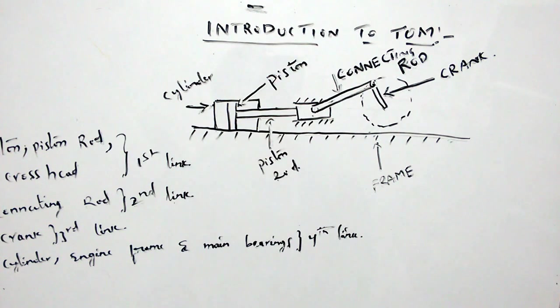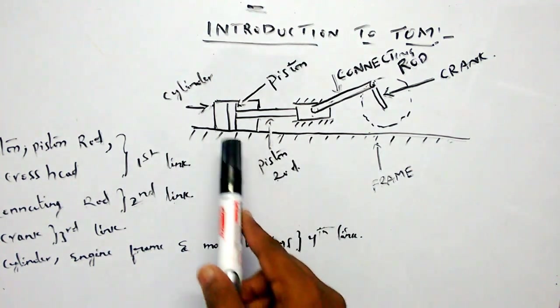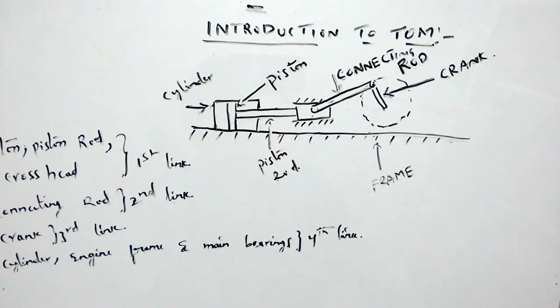For example, if you take a reciprocating steam engine, it converts heat energy into rotary motion with the help of the crank. This machine consists of a number of parts like cylinder, piston, piston rod, connecting rod, crank, and so on.